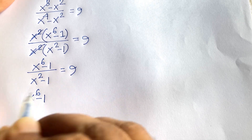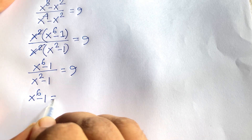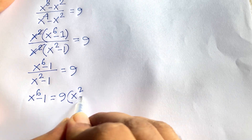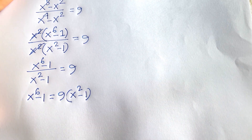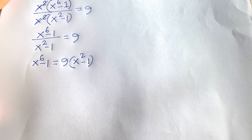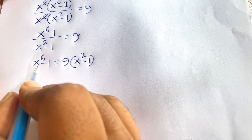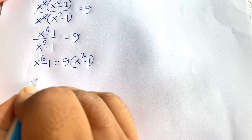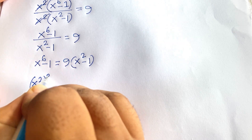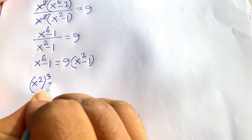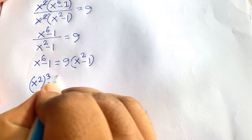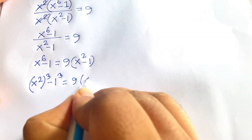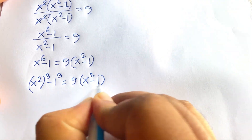Cross-multiplying, x^6 - 1 = 9(x^2 - 1). Now x^6 can be written as (x^2)^3, since 2 × 3 = 6, so we have (x^2)^3 - 1^3 = 9(x^2 - 1).